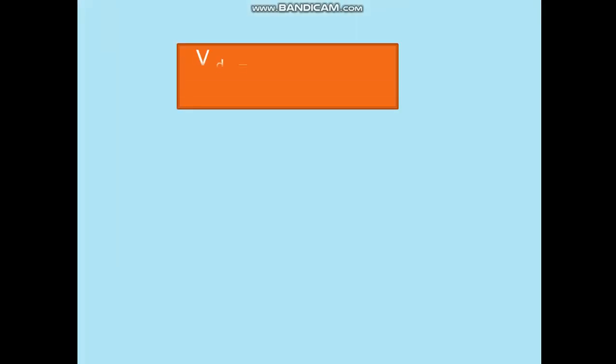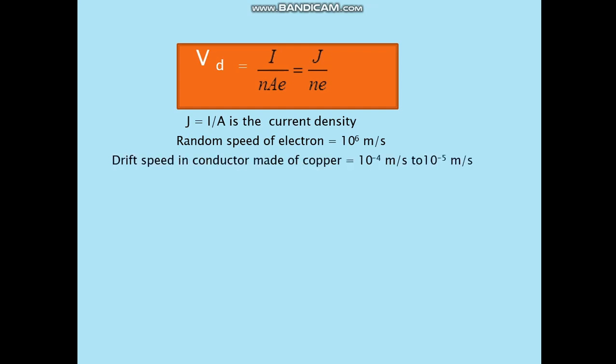We have VD as the drift velocity and VD arranged it to get I upon N E that is equal to J upon N E. So if you compare the two equations, J is nothing but I upon A. That is the current upon the area, which is known as the current density. So the random speed of the electron is 10 raised to 6 meters per second. Drift speed in conductor made of copper is 10 raised to minus 4 to 10 raised to minus 5 meters per second.